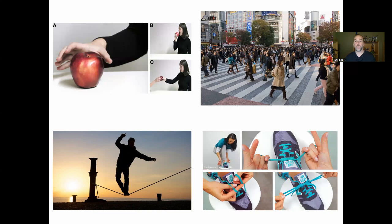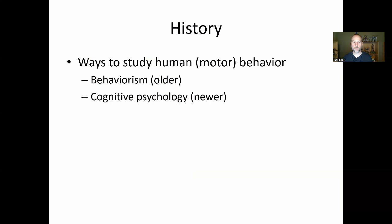Tying your shoes — we can probably all do this without a second thought, but at one point in our lives when we were young it was very hard and took a lot of practice. Now it's almost like a partner dance between our two hands, choreographed perfectly. These are all examples of human motor behavior that we can investigate with a cognitive psychology perspective.